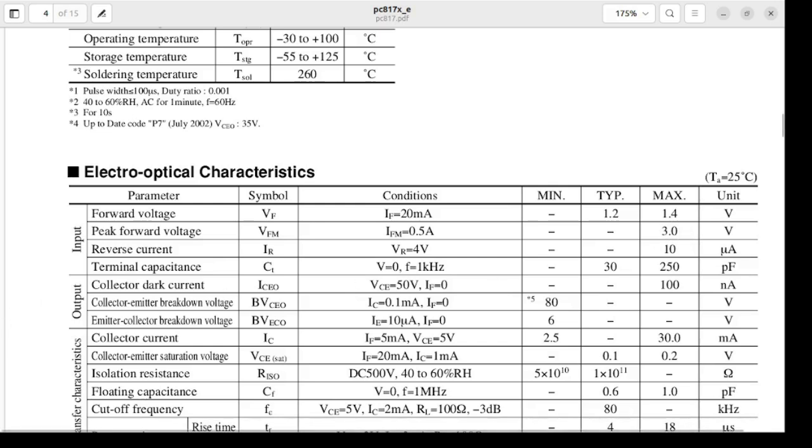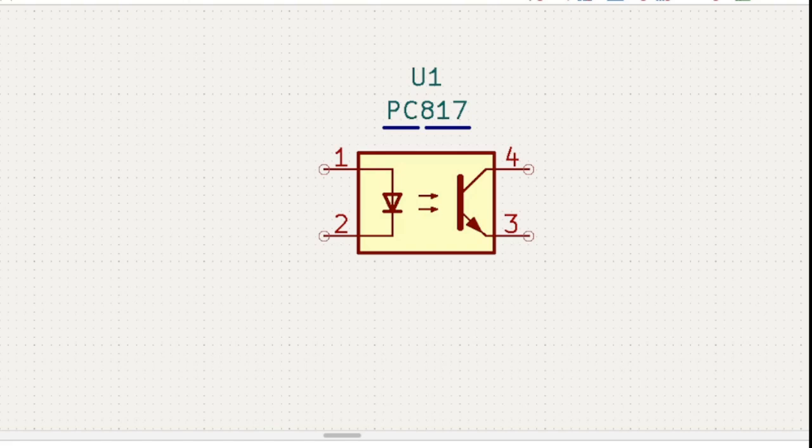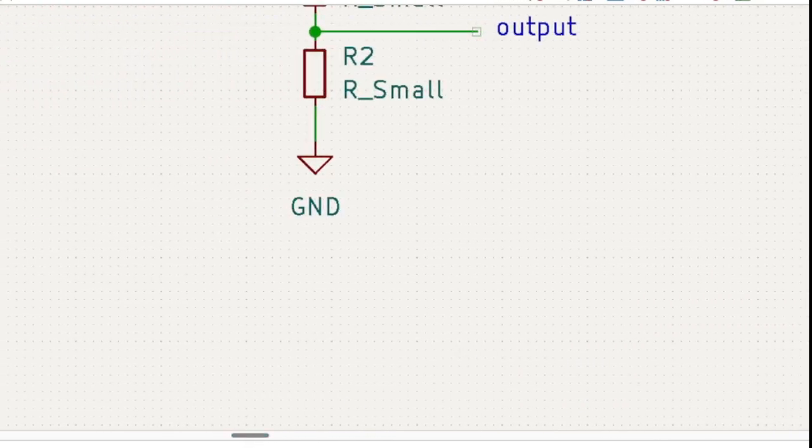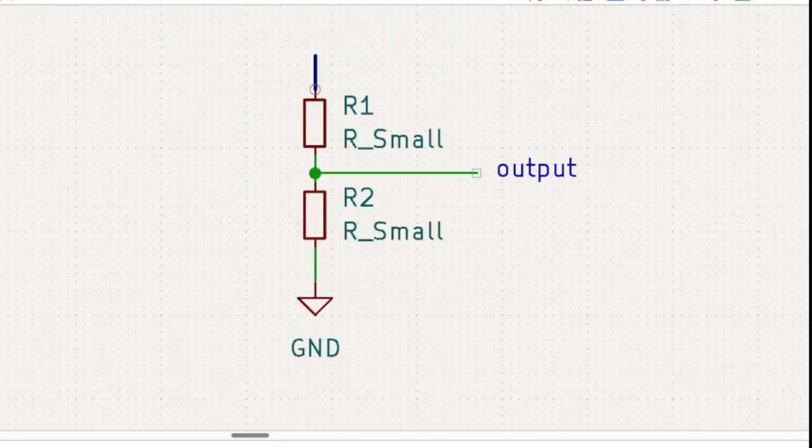For that we have to design a network. When we make this circuit, then we have to calculate the resistance network. Look at this: that is your upper arm and that is your lower arm. R1 resistance and R2 resistance are in this network.